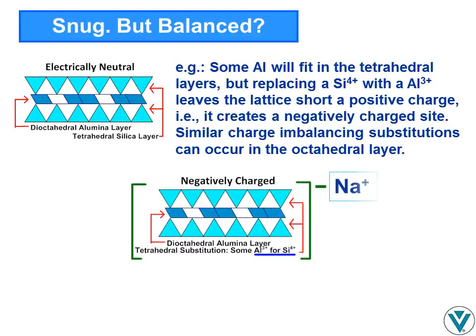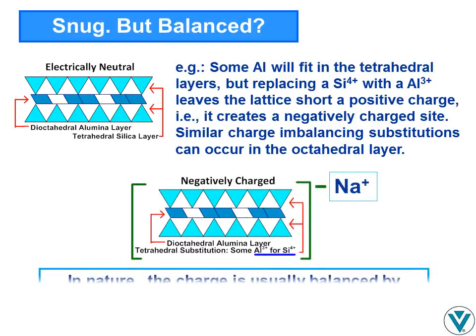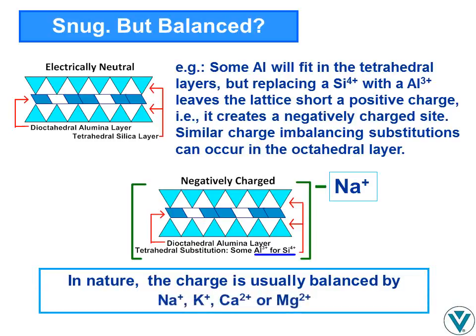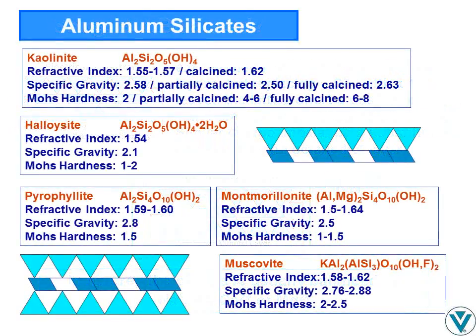This charge must be balanced, and in nature this is usually done by sodium, potassium, calcium, or magnesium ion. The most common structurally related di-octahedral phyllosilicates are kaolinite, halloysite, pyrophyllite, montmorillonite, and muscovite mica.